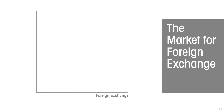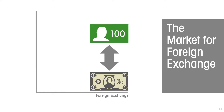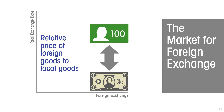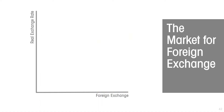On the horizontal axis, we are measuring foreign exchange transactions — but not all foreign exchange transactions involving US dollars in the entire world. We're talking about demand for and supply of US dollars in exchange for local currency. So this is a narrow slice of the global foreign exchange market: the market for exchanging local currency for US dollars. On the vertical axis, we have the real exchange rate — the relative price of foreign goods to local goods.